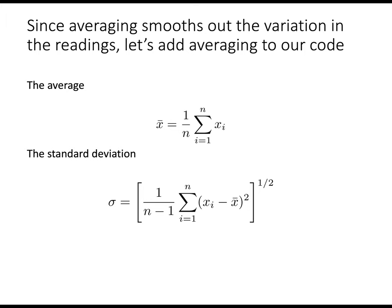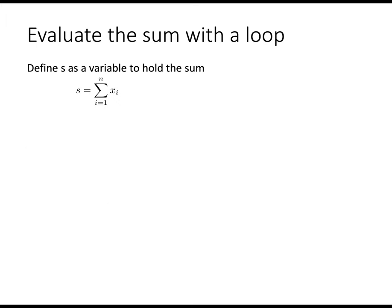Right now, though, the average x bar is computed with this simple formula. It's familiar to you. We're going to break it apart a little bit. Let's create a new variable called s, which is just the sum. We'll divide by n later. So to do the sum in a computer code, we're going to have to add one term at a time. And we're going to use a loop to do that.